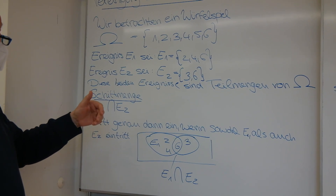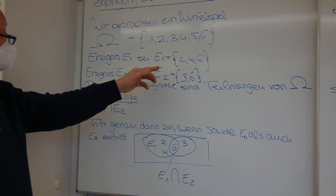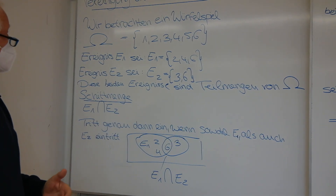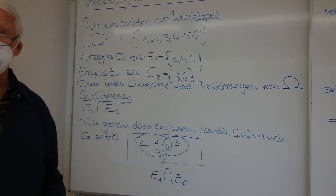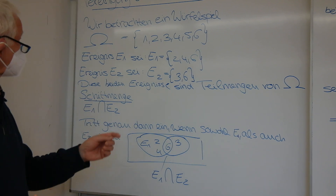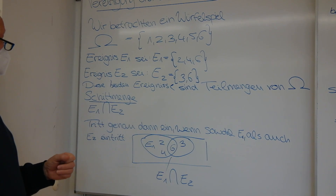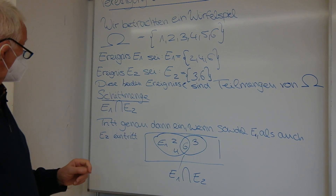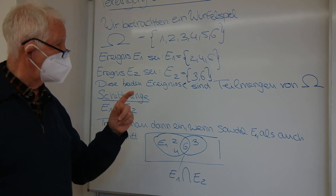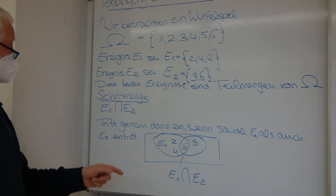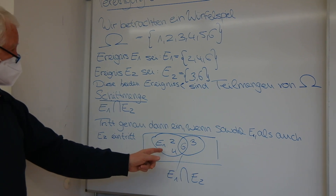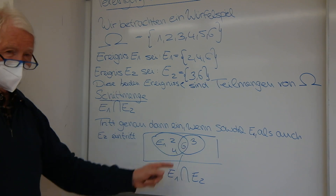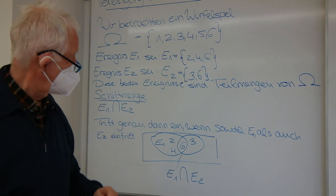Nehmen wir mal an, wir haben zwei Ereignisse. Es sei E1 = {2, 4, 6} – das heißt, wir haben die Zahlen 2, 4 und 6 gewürfelt, das wären alles gerade Zahlen. Und das Ereignis E2, da haben wir die 3 und die 6 gewürfelt – das wären die durch 3 divisierbaren. Wenn ich jetzt die Schnittmenge von E1 und E2 suche, dann tritt diese Schnittmenge genau dann ein, wenn sowohl E1 als auch E2 eintritt. Wir haben die Menge E1 mit 2, 4 und 6, die Menge E2 mit 6 und 3, und dann liegt die 6 genau im Schnitt.